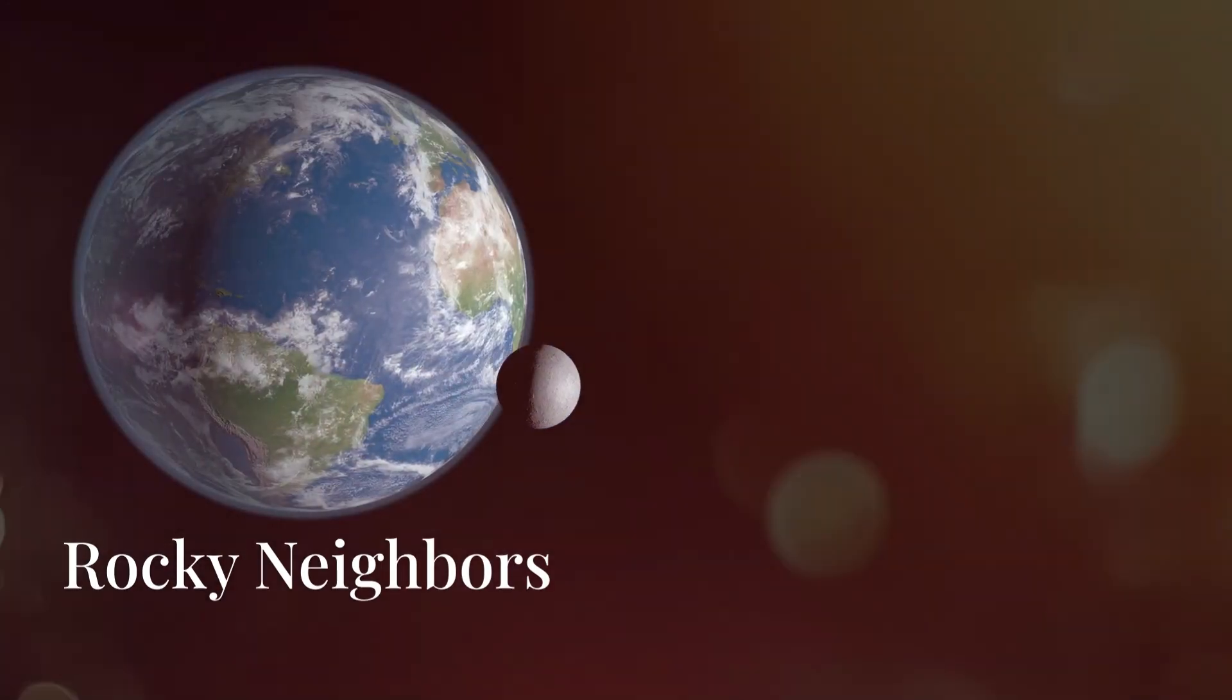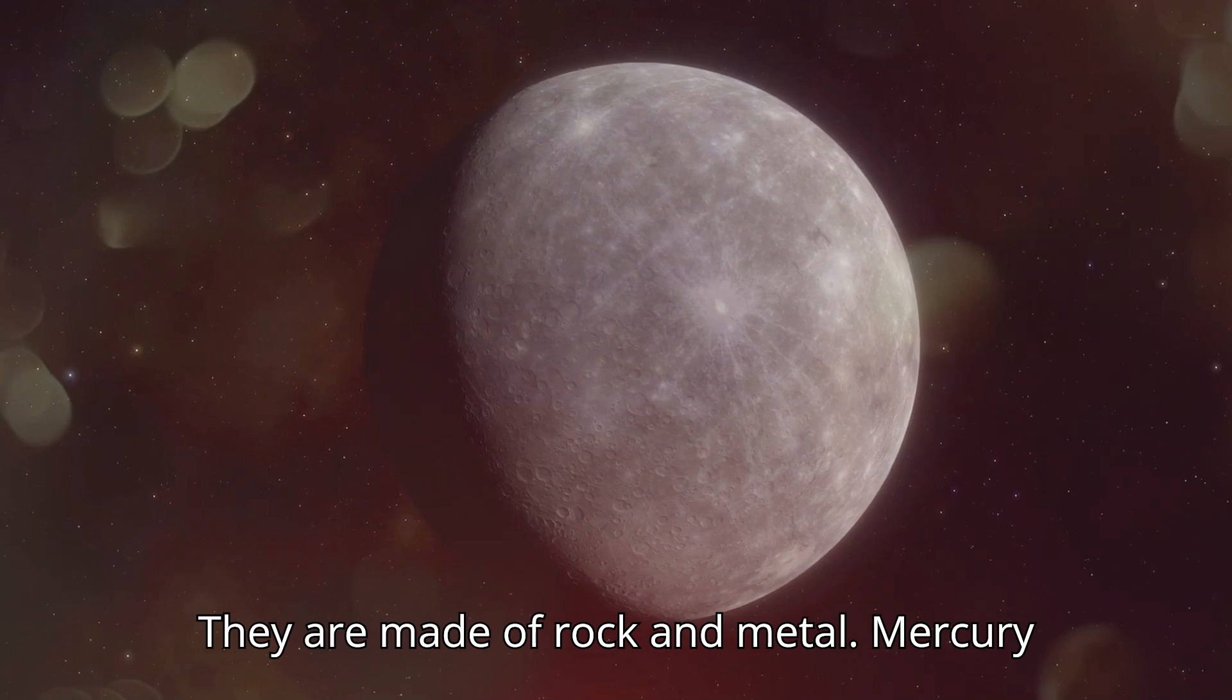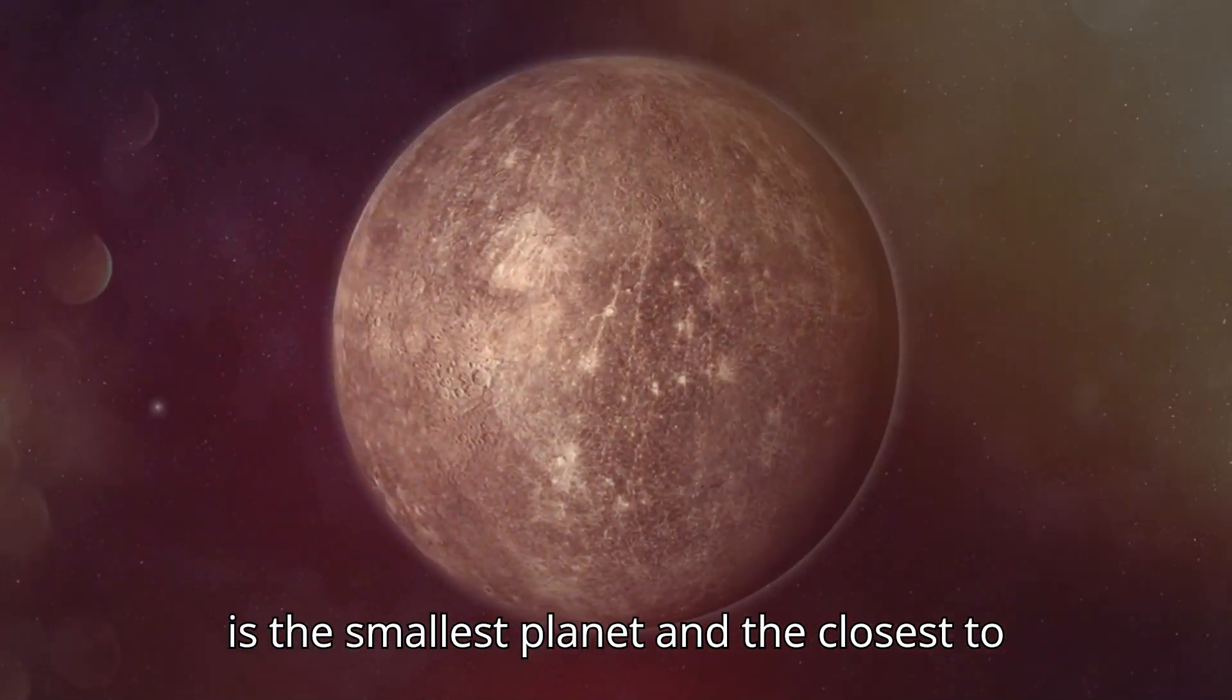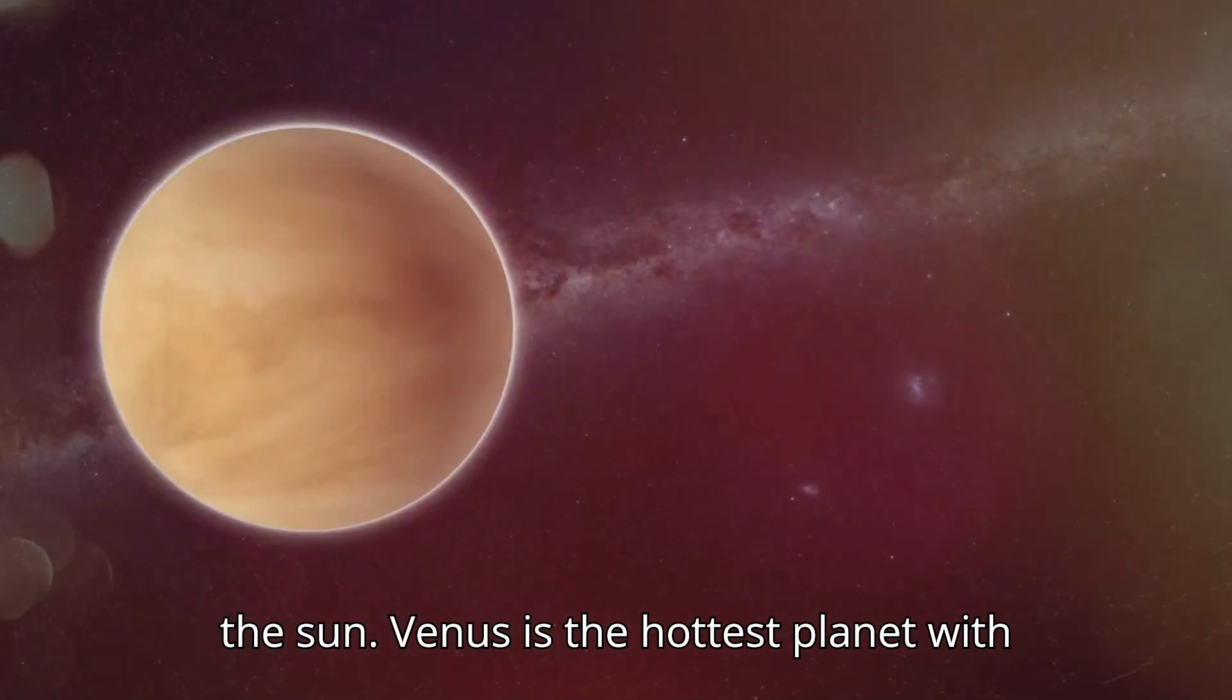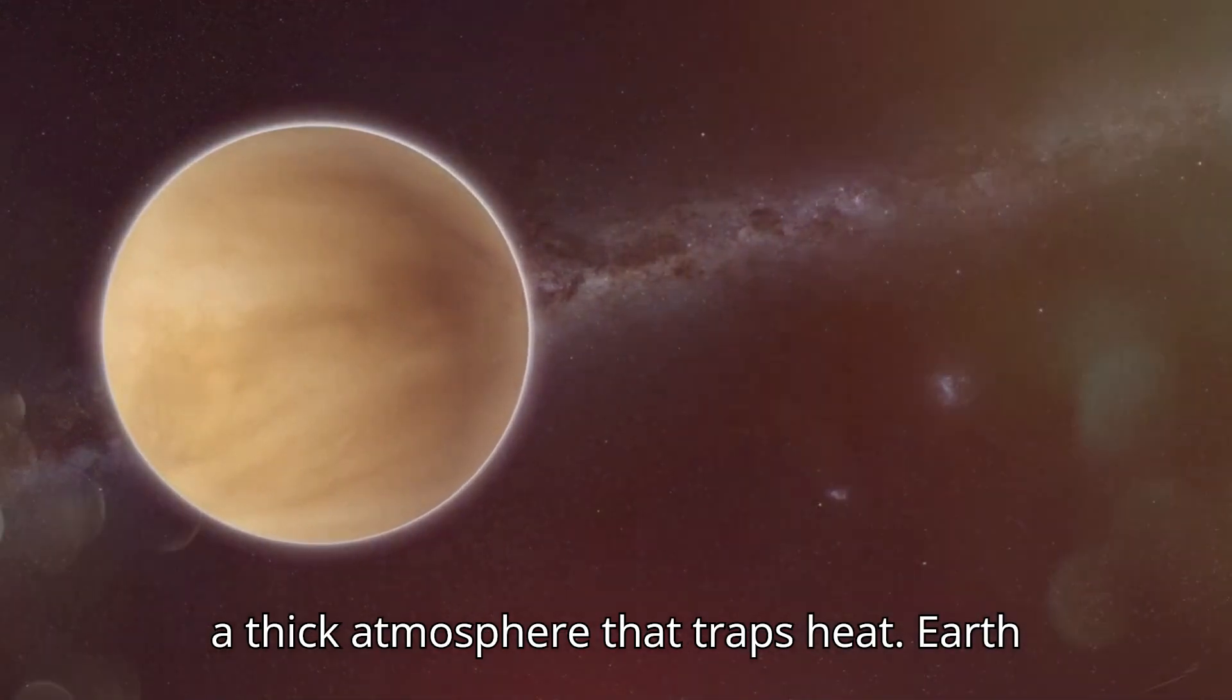The inner planets are close to the sun. They are made of rock and metal. Mercury is the smallest planet and the closest to the sun. Venus is the hottest planet with a thick atmosphere that traps heat.